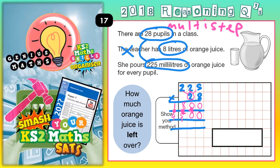Finally, we need to add together the two rows. Nothing and nothing is nothing, nothing and nothing is nothing again. 8 and 5 is 13, put the 3 in and carry the 1. Remember to scribble out any carry digits because you don't need those again. 1 plus 4 is 5, plus the 1 carried is 6. So we have got 6,300 millilitres of juice.